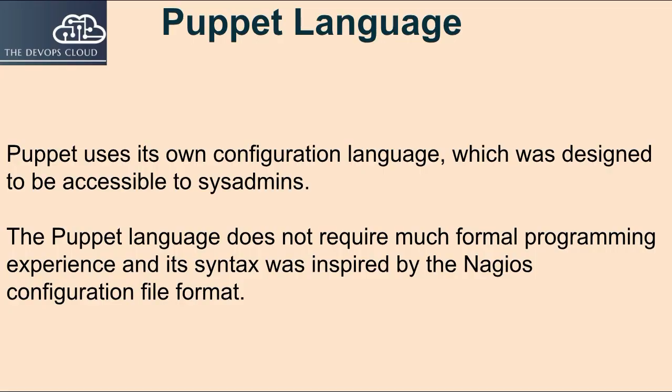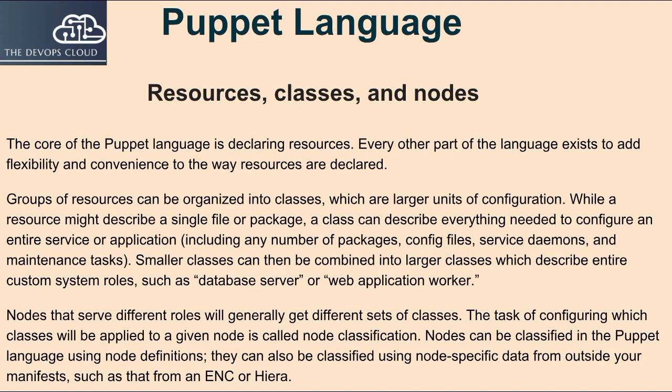Puppet uses its own configuration language, which was designed to be accessible to sysadmins. The Puppet language does not require much formal programming experience and its syntax was inspired by the Nagios configuration file format. The core of the Puppet language is declaring resources. Every other part of the language exists to add flexibility and convenience to the way resources are declared.